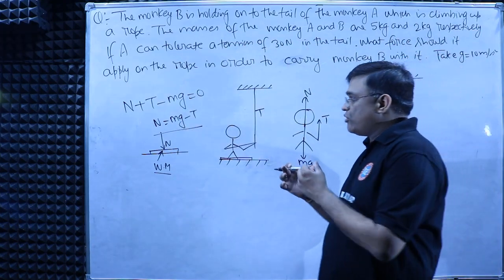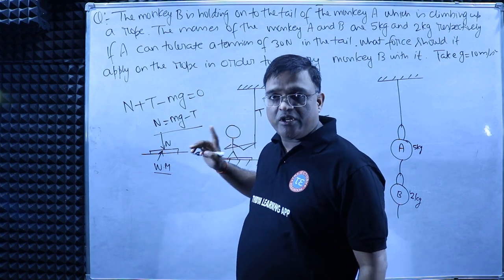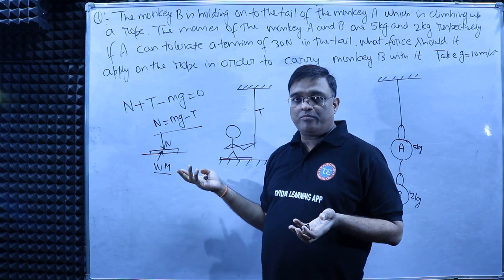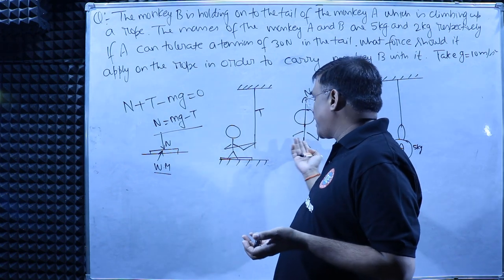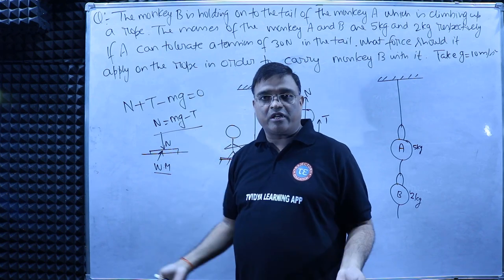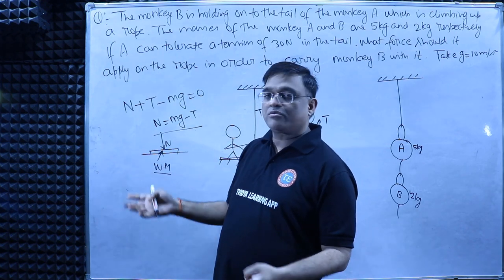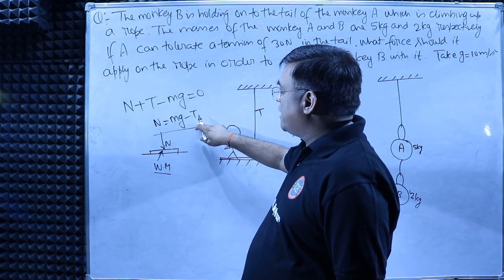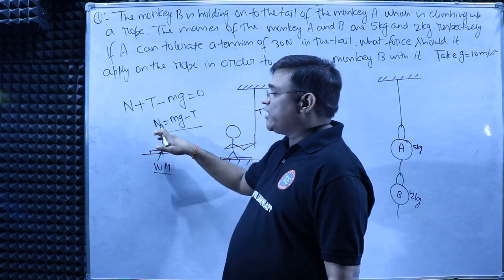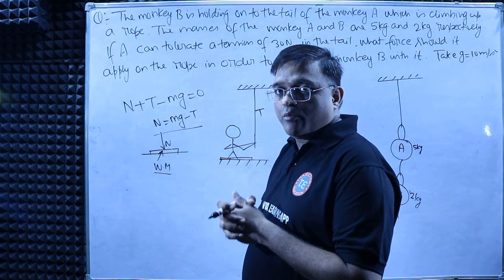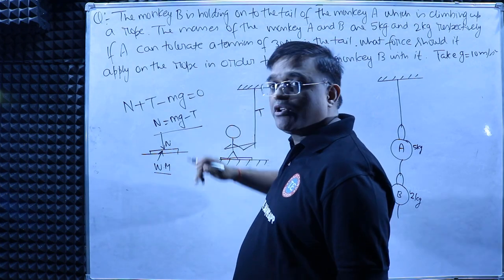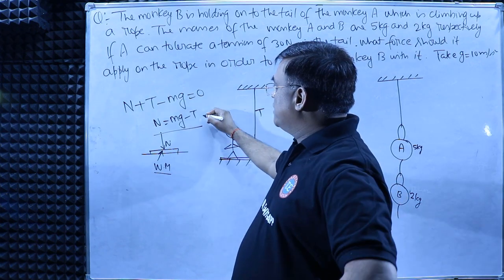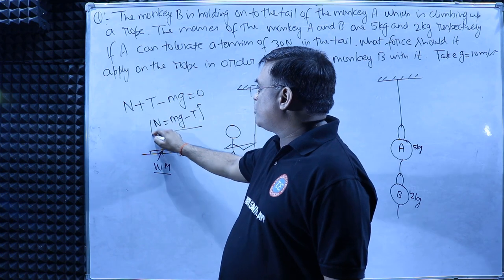Therefore, N equals Mg minus T. If you don't hold the rope, T is zero and N equals Mg — the weighing machine shows your correct weight. As you pull the rope harder, T increases and the normal reaction N falls. The harder you pull, the more the normal reaction decreases.